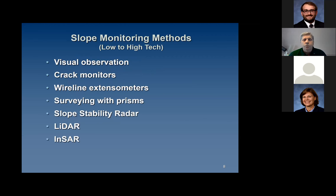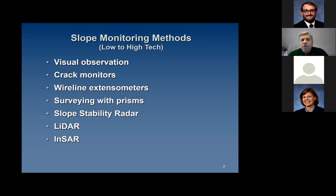What are the slope monitoring methods used in mining? Similar to what you see anywhere in the geotechnical industry. From low to high tech: visual observation, crack monitors, wireline extensometers, surveying with prisms, slope stability radar, LiDAR, and InSAR. We're not going to talk about visual monitoring — what we usually call spotters or witnesses — because they cannot react fast enough to notify the people below the potential failure area that a failure is occurring. We'll talk about each of these other methods and how they're used.